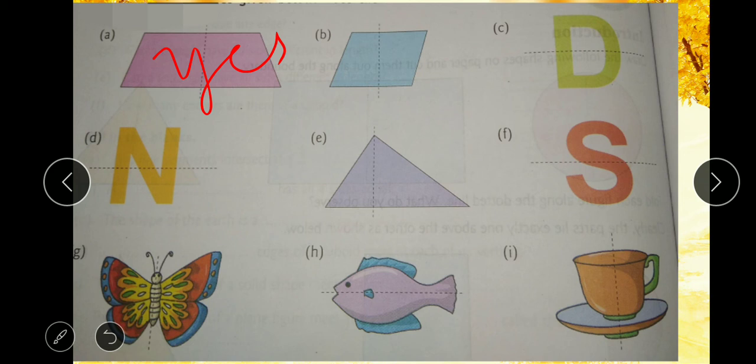Now, in B part, first part is not equal to the another part. So, we will say that no, it is not a symmetrical shape. Same thing is happening in the C question also. The symmetrical line is dividing the part into two equal parts. So, yes, the given figure is a symmetrical shape.